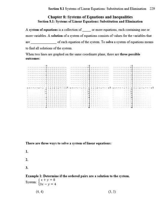This is section 8.1, and we're going to talk about systems of equations. A system of equations is a collection of two or more equations, each containing one or more variables. A solution of a system of equations consists of values for the variables that are solutions of each of the equations in the system. To solve a system of equations means to find all the solutions of the system.